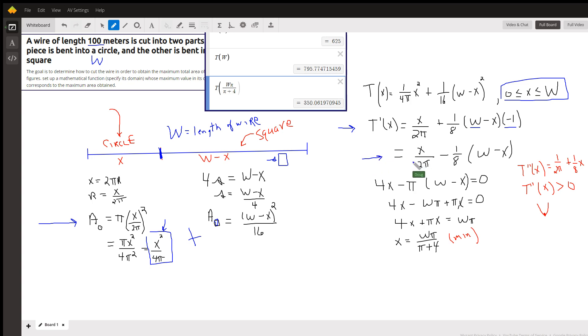I would go ahead and multiply every term by 8π to clear the equation of fractions, so that gives us 4x minus π times (w minus x) equals 0.